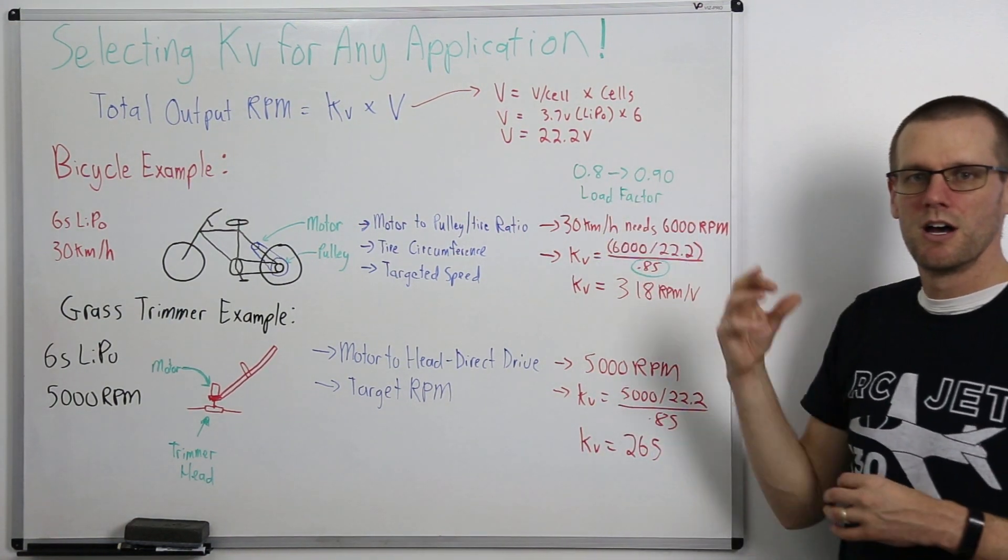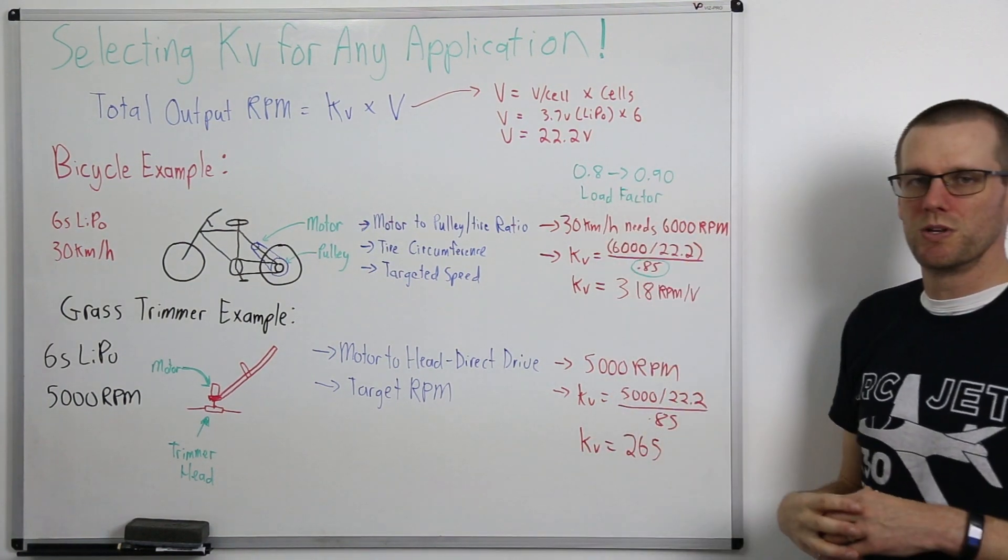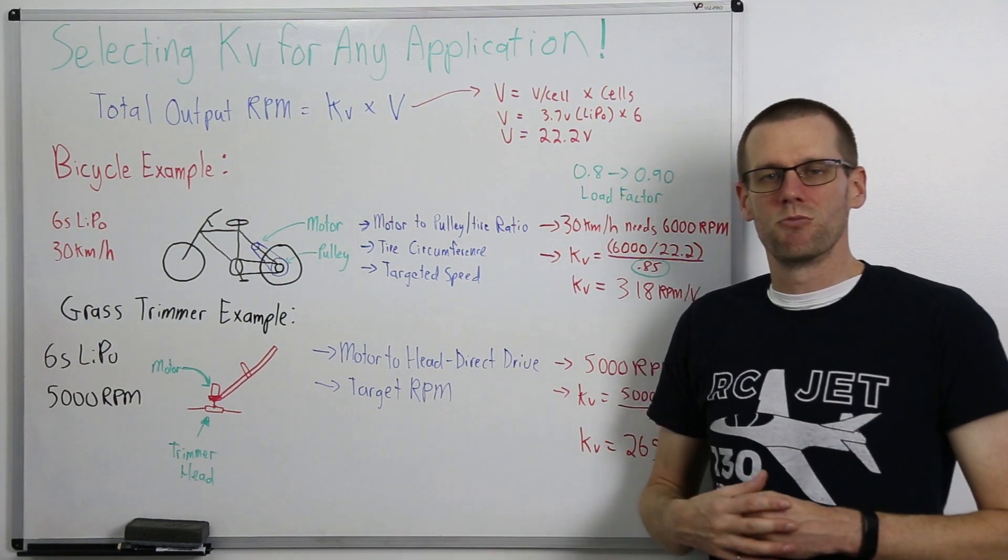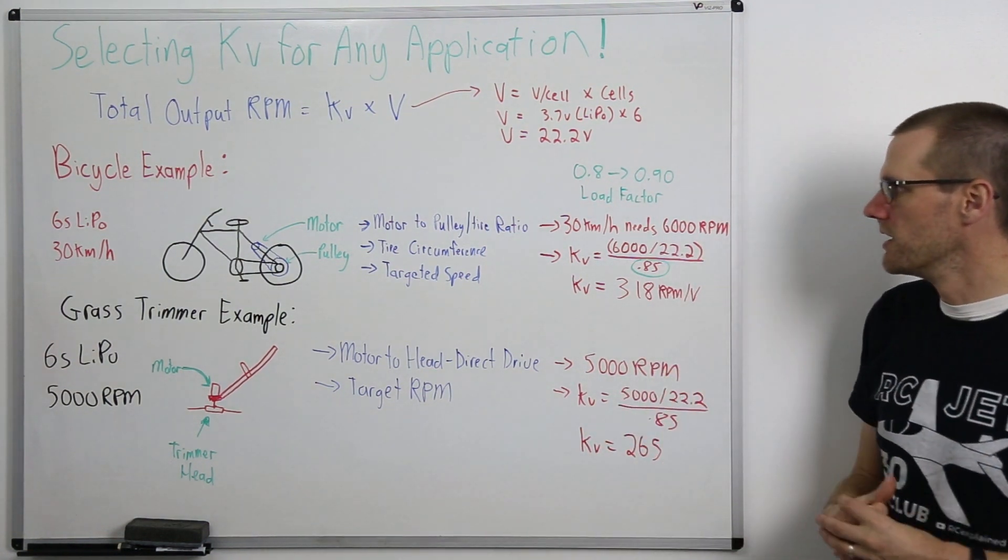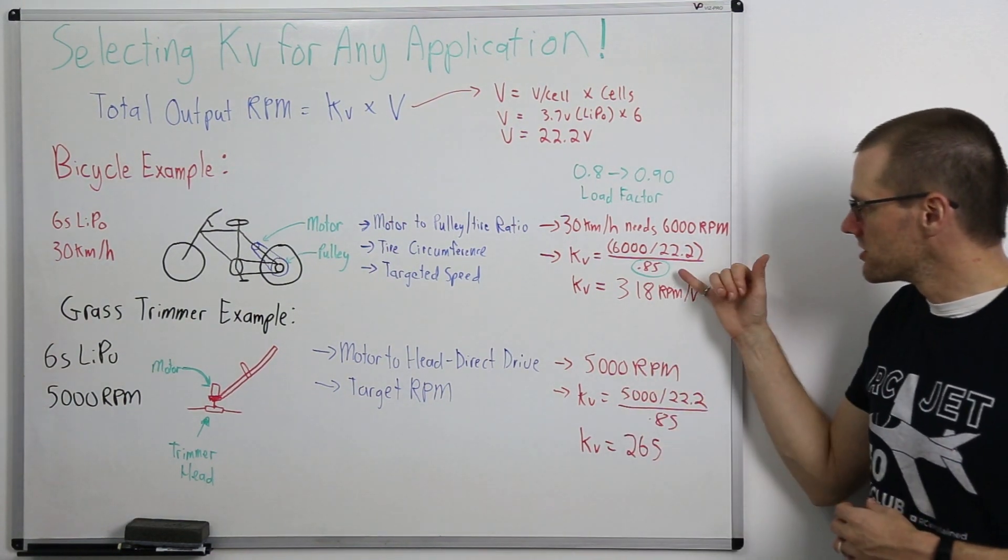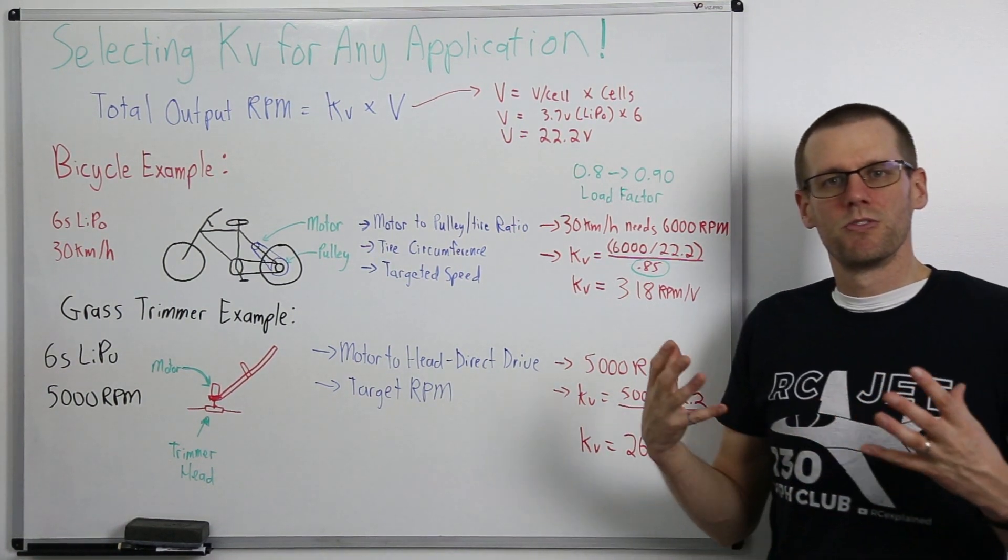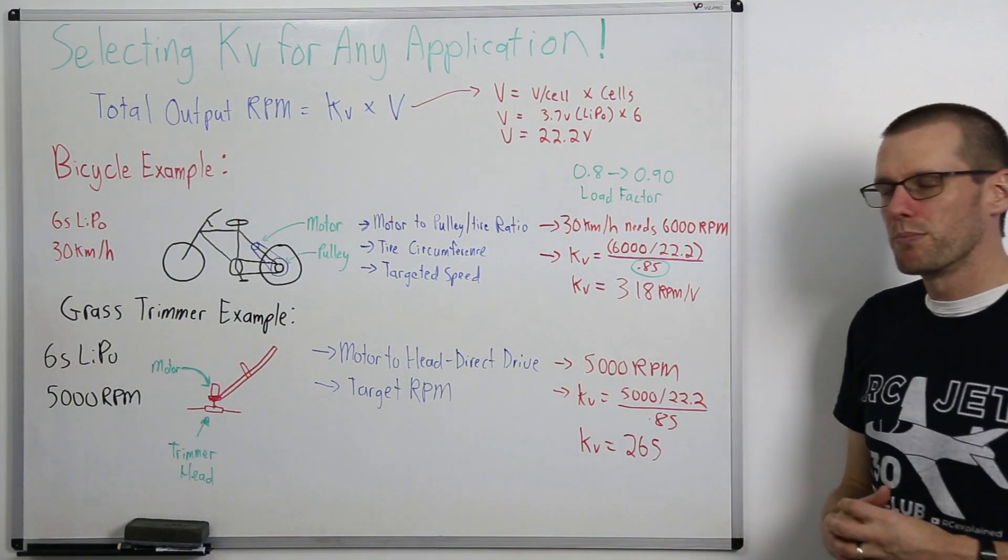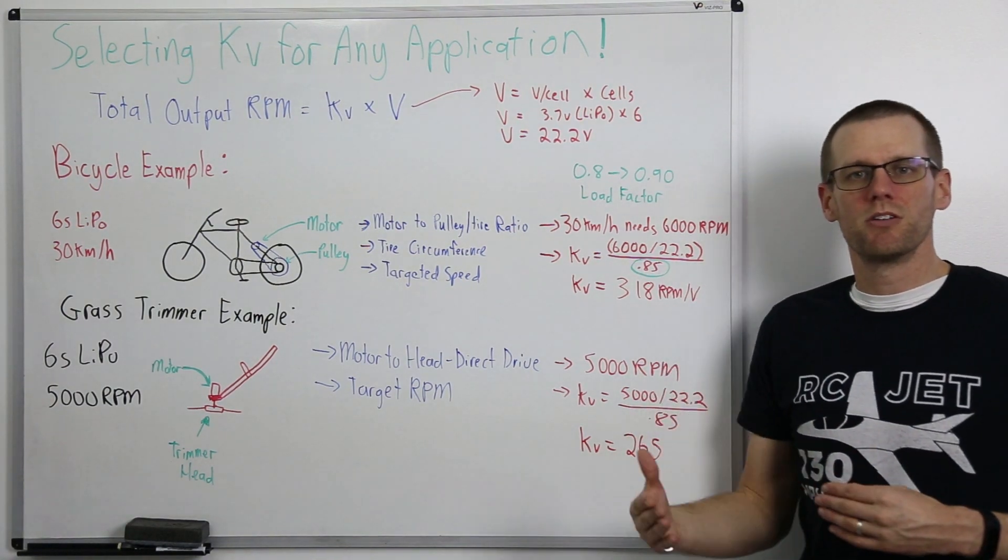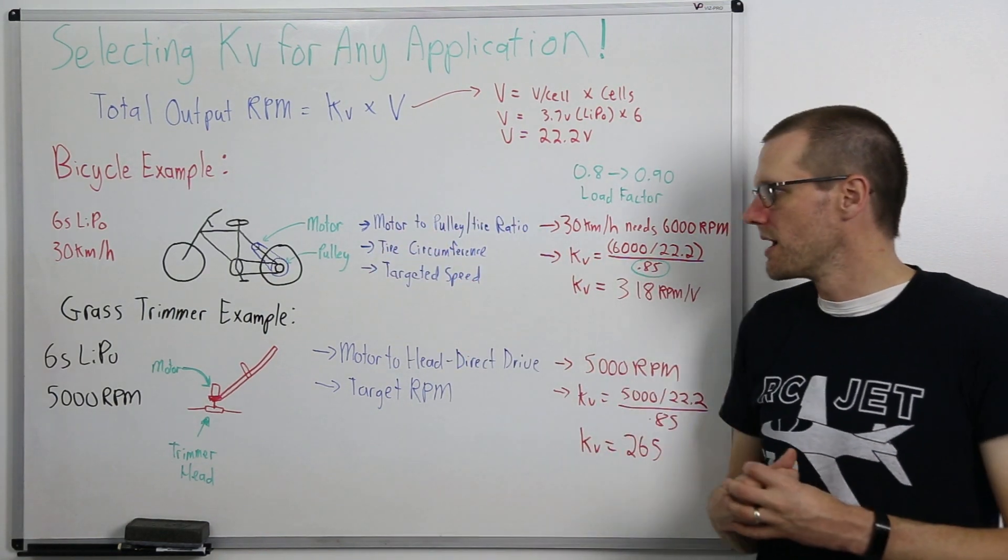Now it is an approximation and there is a lot more variables that come into it. However if you use a number between this you should arrive at a good result that can represent the rpm that you need. So that's how we go and use the load factor. What I've done here in the equation is just taken the average in which case the kV works out to 318 rpm per volt. So I'm looking for a motor that has a roughly a 320 kV value in order to satisfy the requirements of our bicycle example.